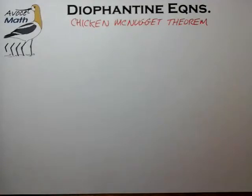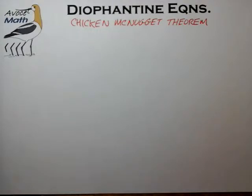Welcome back to Avocet Math. In this video we're going to talk about something called the Chicken McNugget Theorem, which is a useful solution concept for Diophantine equations that's helpful to know for some of the questions that come up in the AIME and the US AMO level of testing.